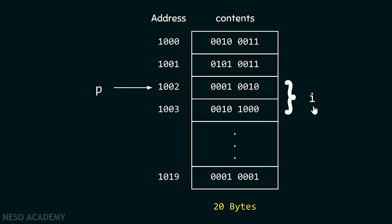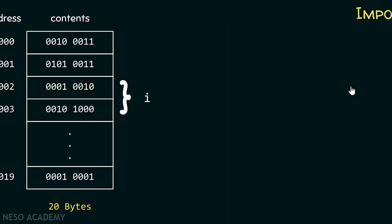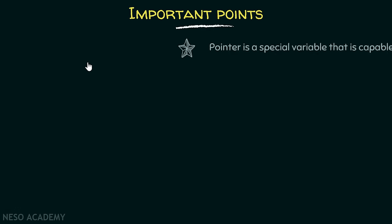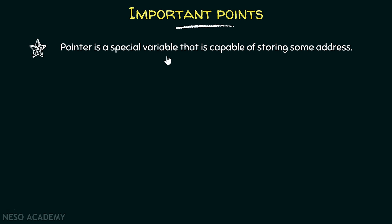Now let me give you the definition of a pointer. Pointer is a special variable that is capable of storing some address. In our example, it is storing the base address of integer variable i. It can store the initial address of any object. But in our example, it is storing the initial address or base address of integer variable i. It is a special variable.